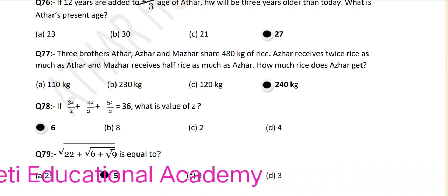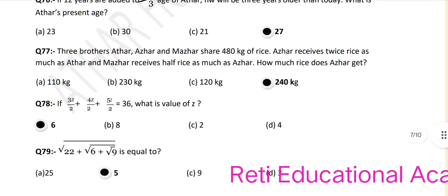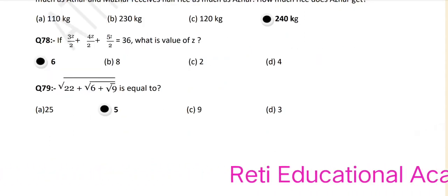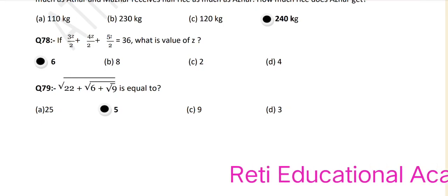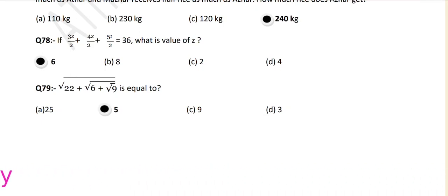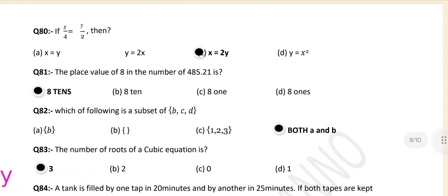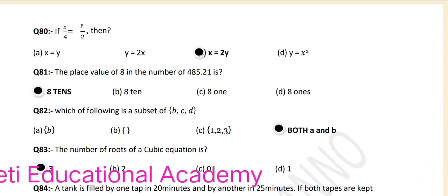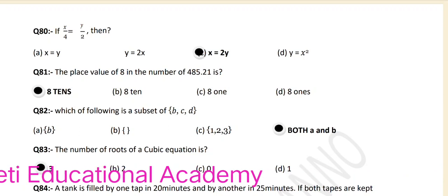The answer is 6. Question number 79: The square root of 22 plus the square root of 6 plus the square root of 9 is equal to 5. Question number 80: If x upon 4 is equal to y upon 2, then x is equal to 2y.